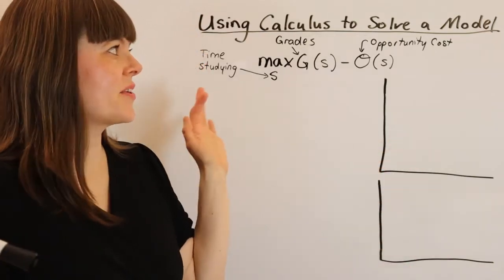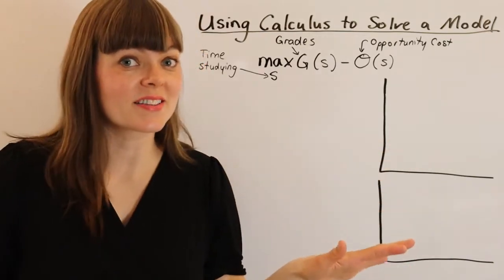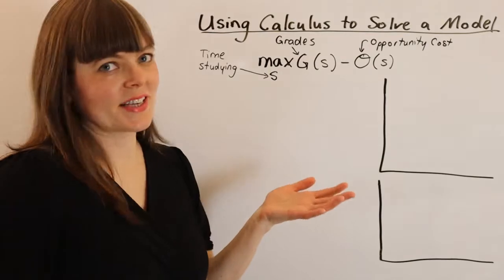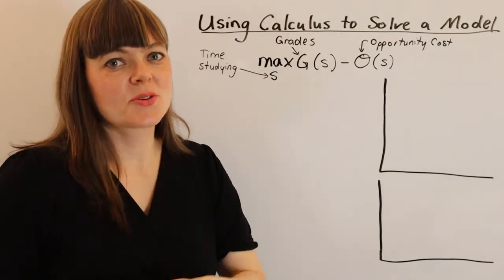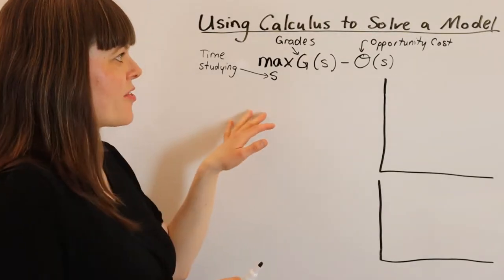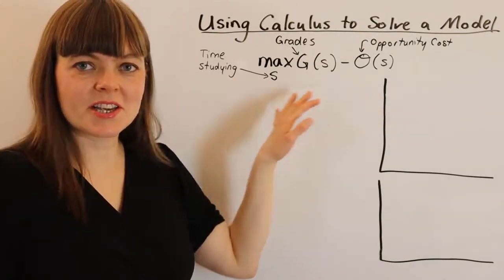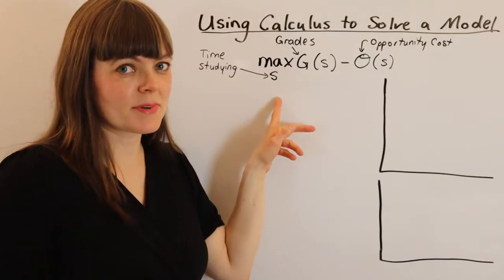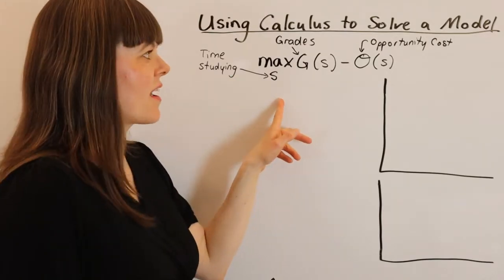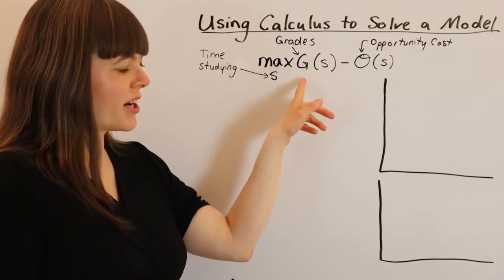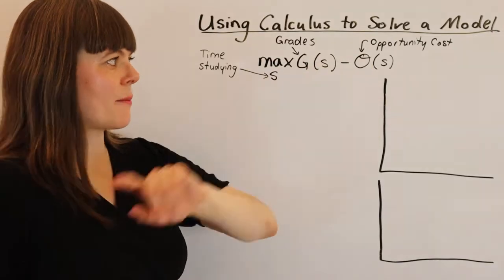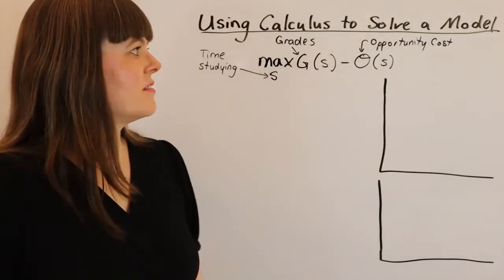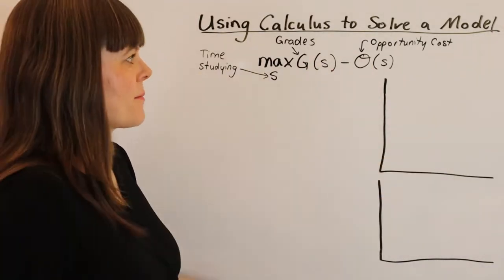In this video I'm going over how to use calculus to solve an optimization problem in economics. I've set up in other videos this particular model - we're modeling the decision about how much time to spend studying, and our objective function is grades minus opportunity cost, what we could do with that time we're spending studying.